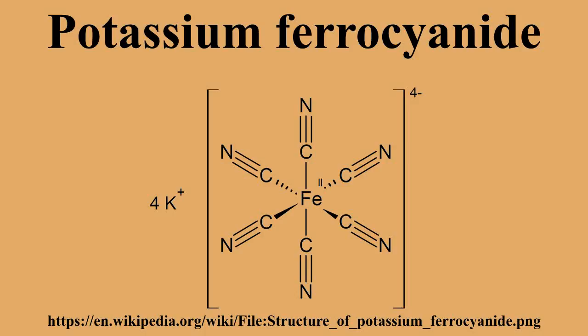Chemical reactions. Treatment of potassium ferrocyanide with nitric acid gives H2[Fe(CN)5NO]. After neutralization of this intermediate with sodium carbonate, red crystals of sodium nitroprusside can be selectively crystallized. Upon treatment with chlorine gas, potassium ferrocyanide converts to potassium ferricyanide: 2K4[Fe(CN)6] + Cl2 → 2K3[Fe(CN)6] + 2 potassium chloride. This reaction can be used to remove potassium ferrocyanide from a solution.